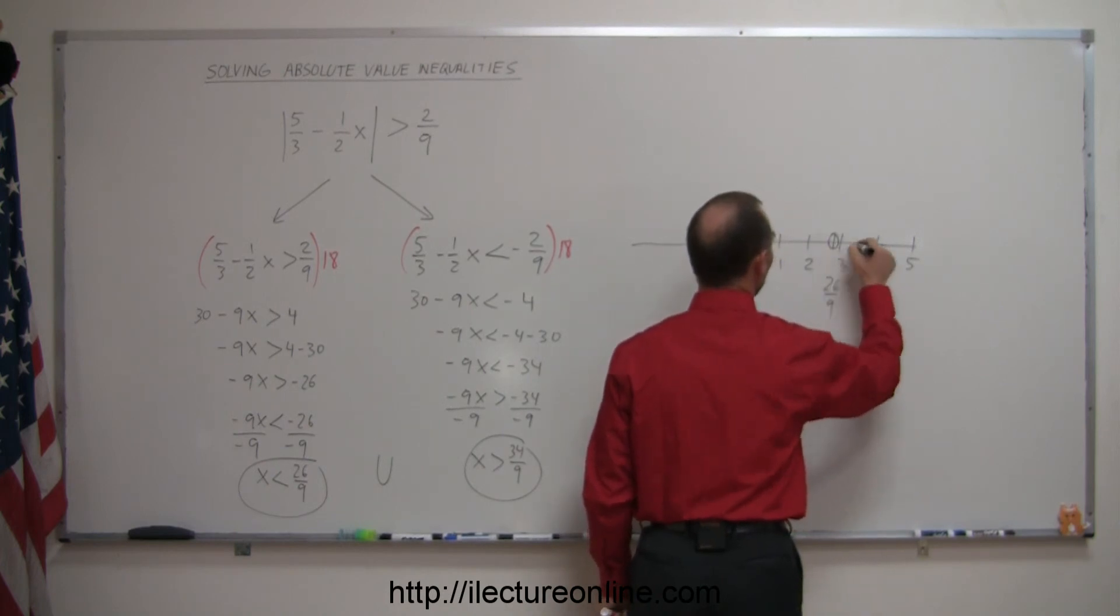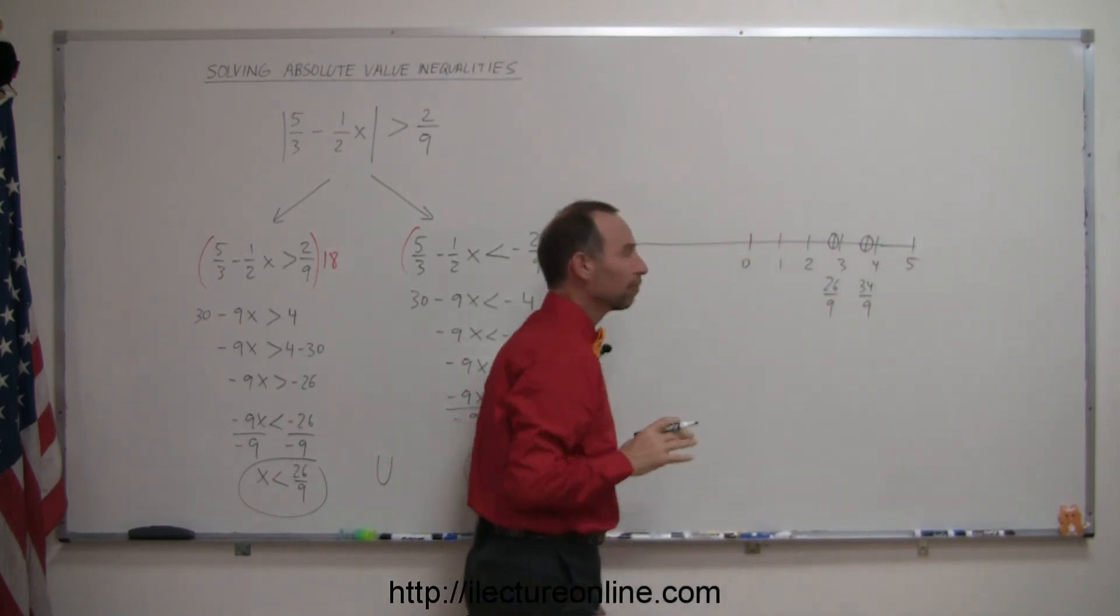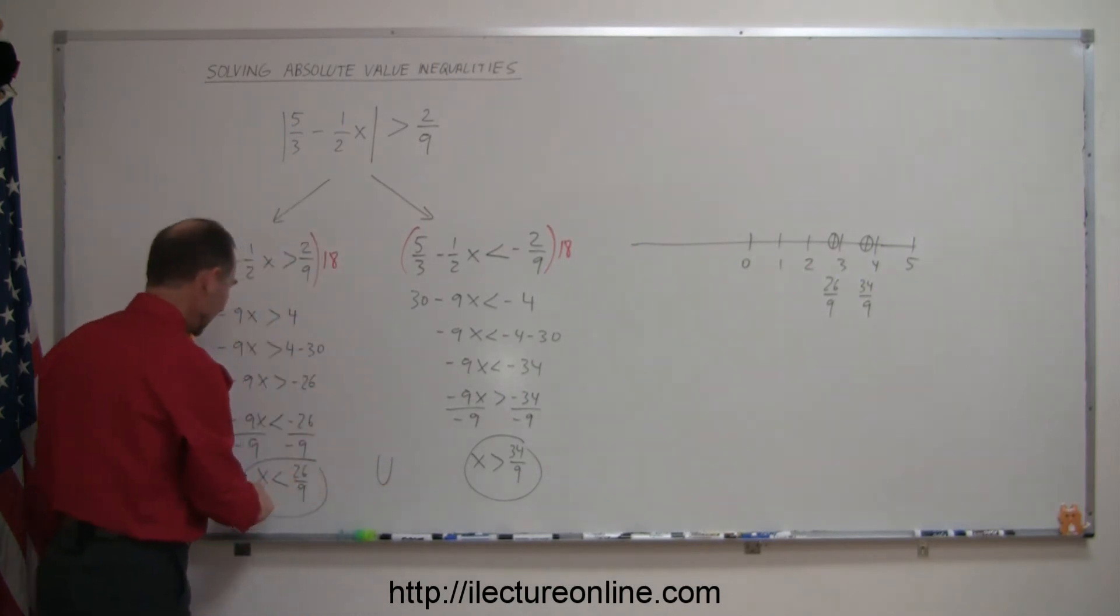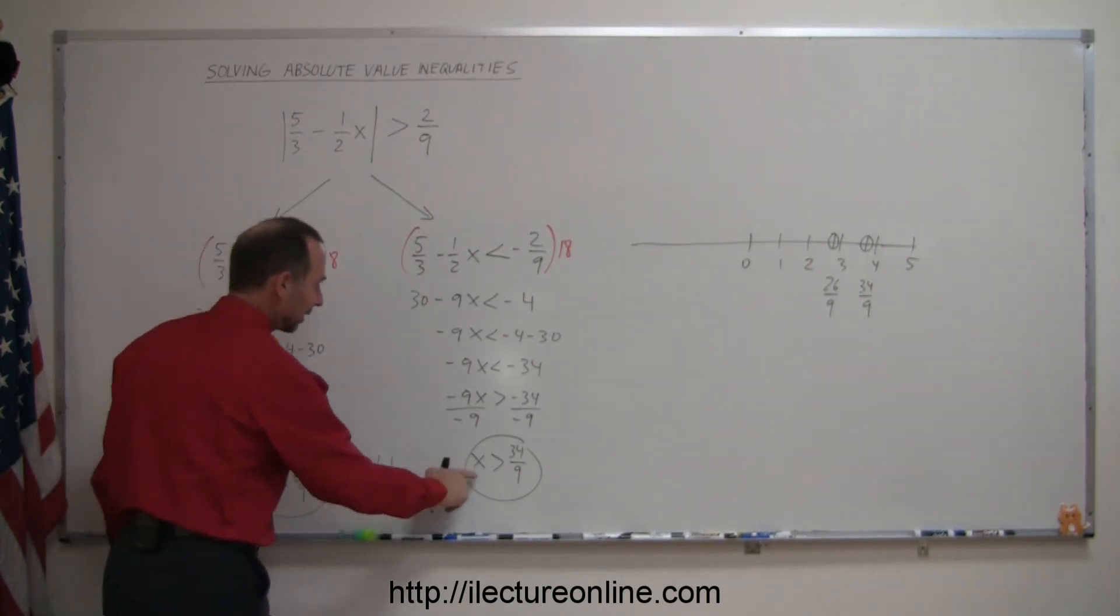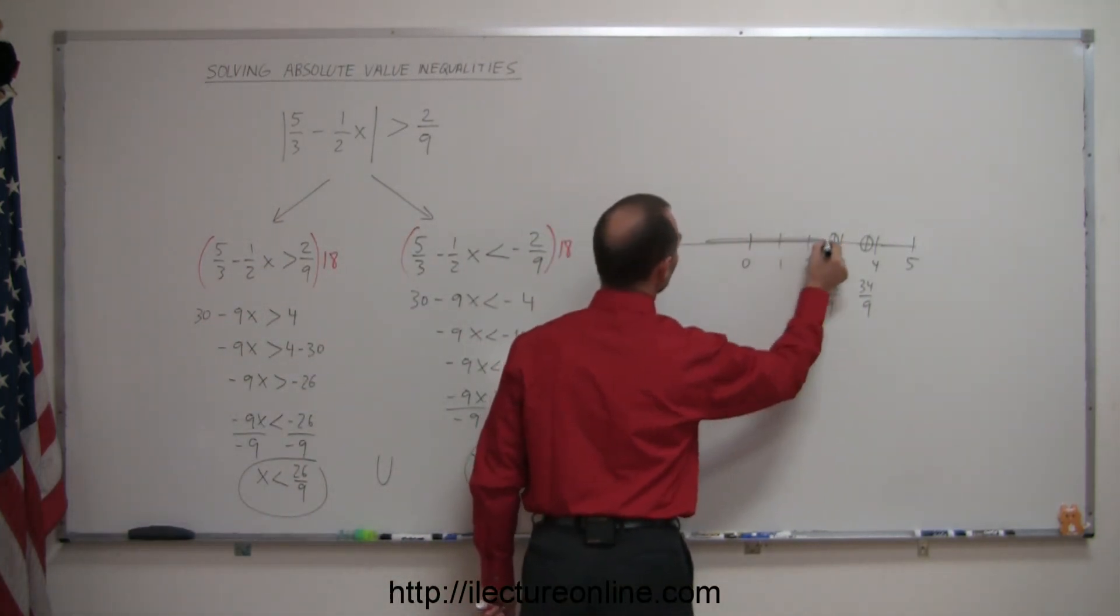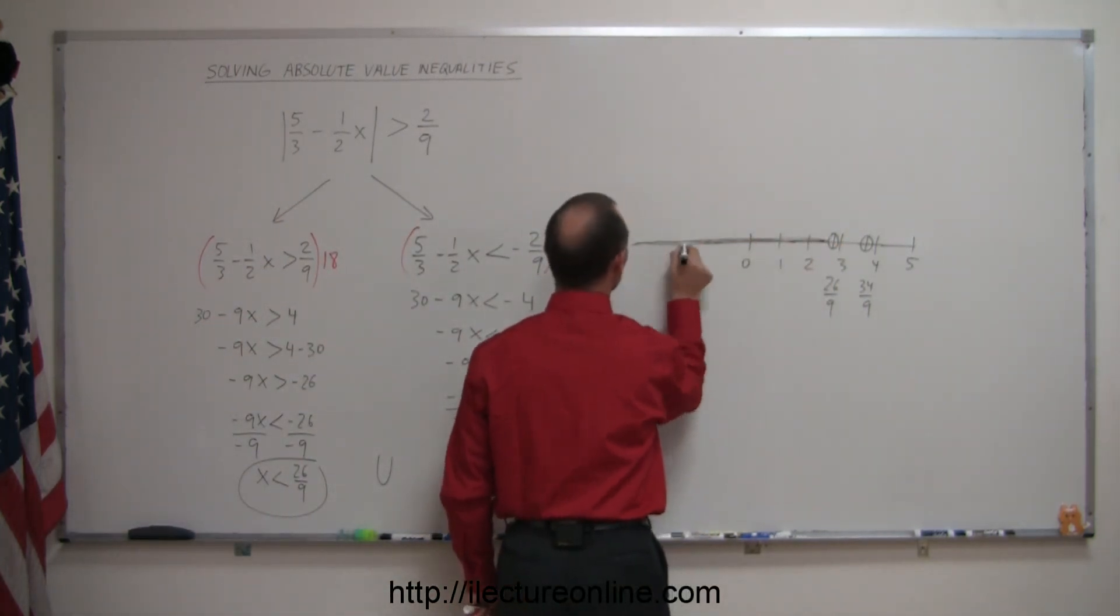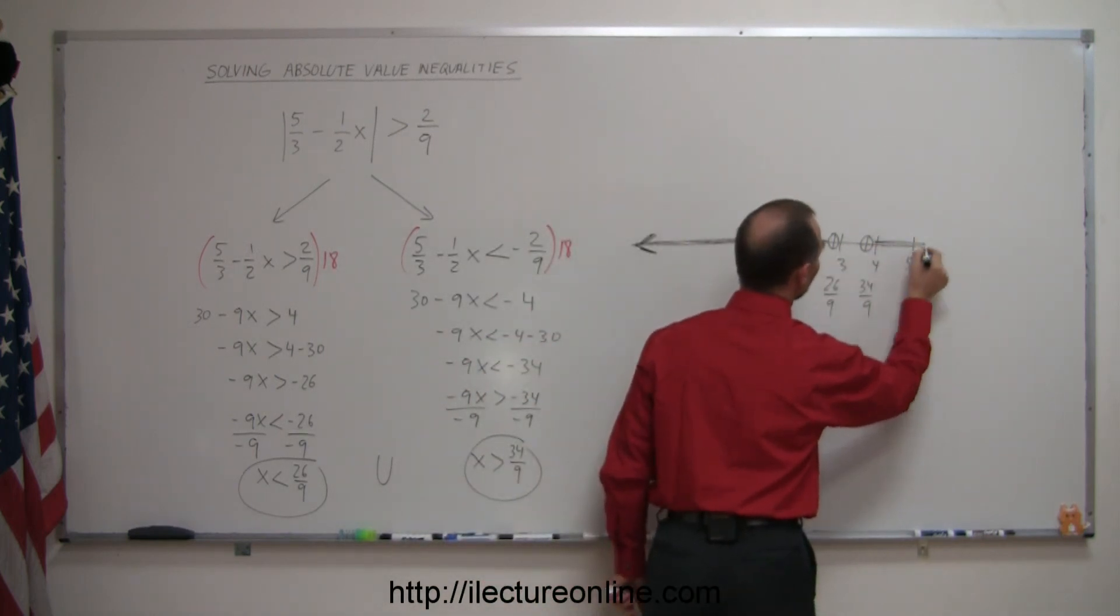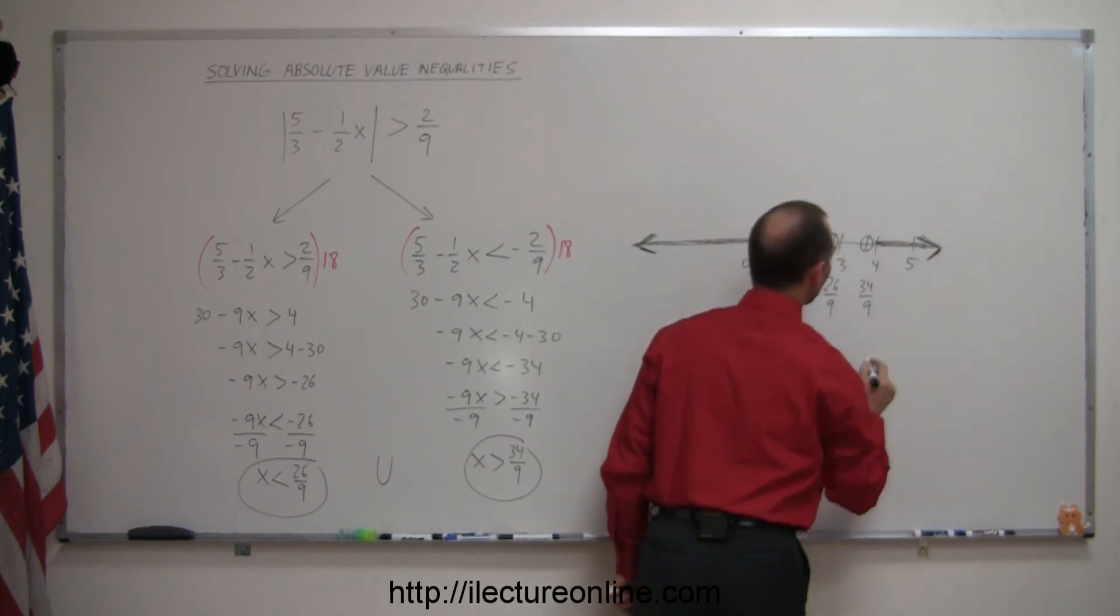Notice that those two numbers are not included, so I draw open circles to indicate the endpoints. x has to be less than this and x has to be greater than that, so everything to the right of that number is also part of the solution. There we go.